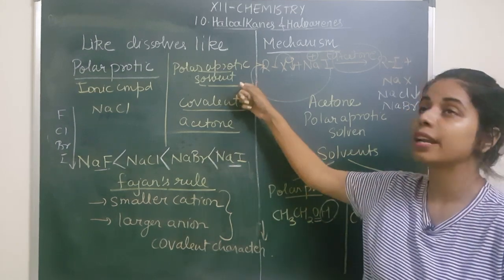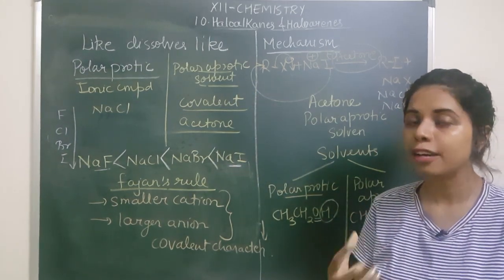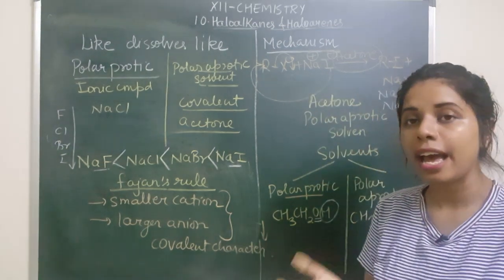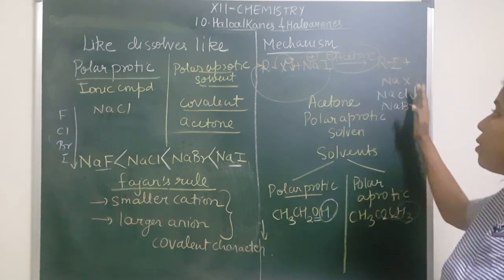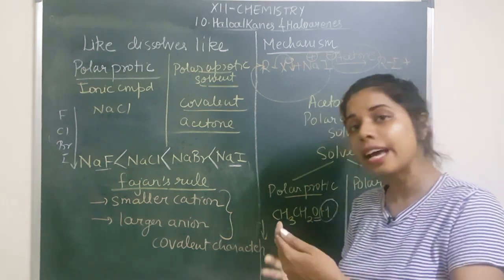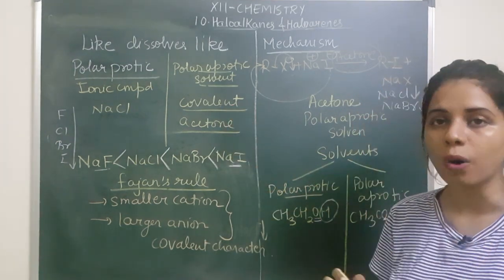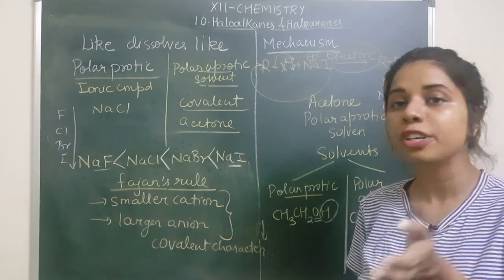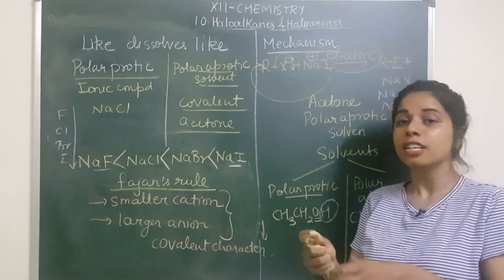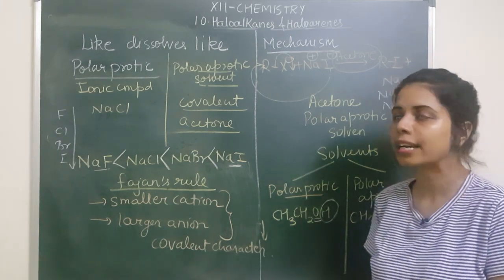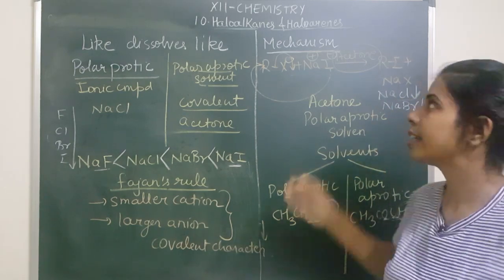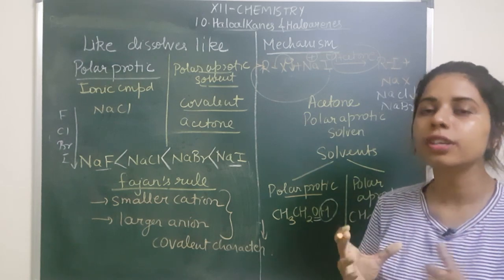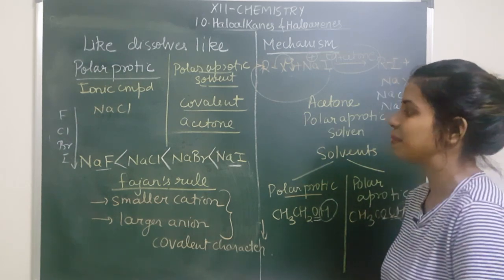So the key points are: acetone is a polar aprotic solvent; polar aprotic solvents dissolve compounds having more covalent character — that is why NaI readily dissolves. The byproduct NaCl or NaBr has more ionic character and cannot dissolve in acetone, so it precipitates out. In precipitated solid form, it cannot act as a nucleophile, cannot attack R, and the reaction does not go backward. That is why Finkelstein reaction is one of the most preferred methods for preparation of iodoalkanes.